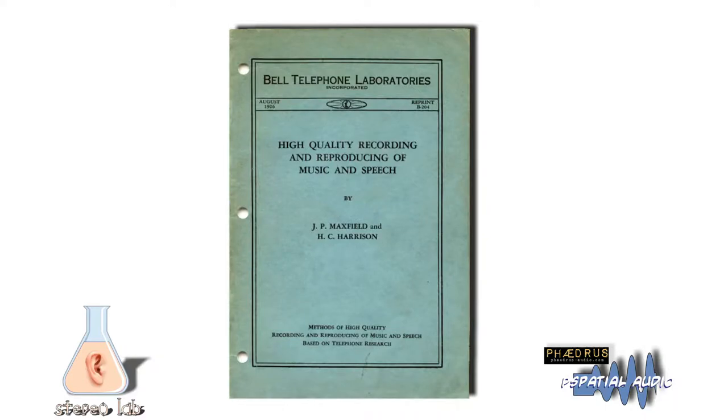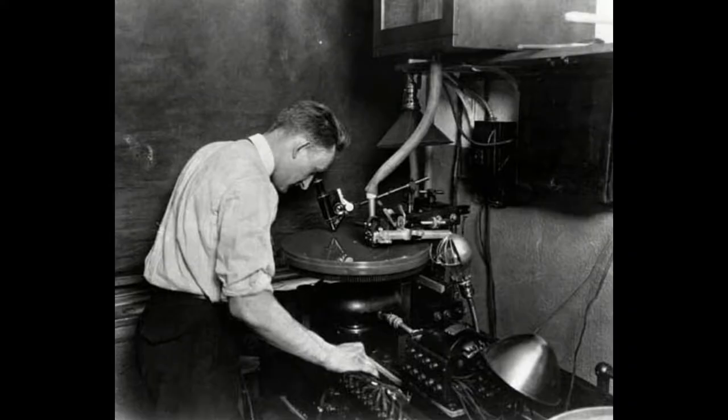And that improvement came from Bell Laboratories, which was the research division of the U.S. telephone company AT&T. Bell developed an electric system of recording, which Western Electric, the manufacturing arm of AT&T, called the Westrex electric recording system in 1926.